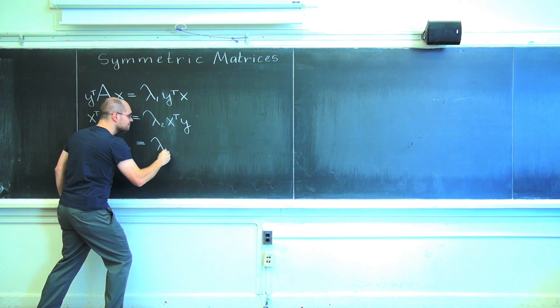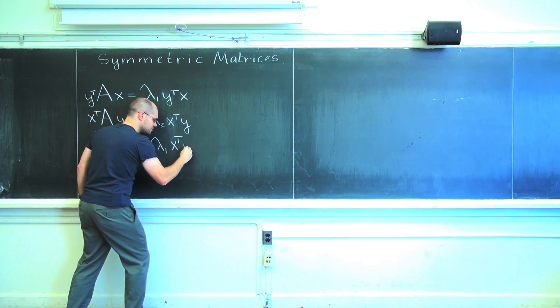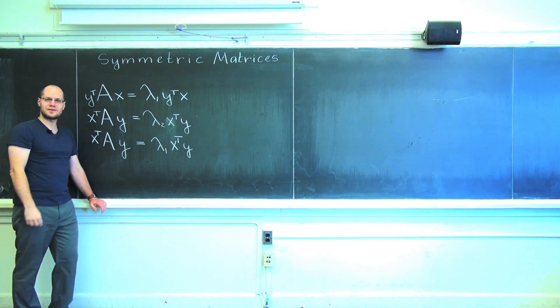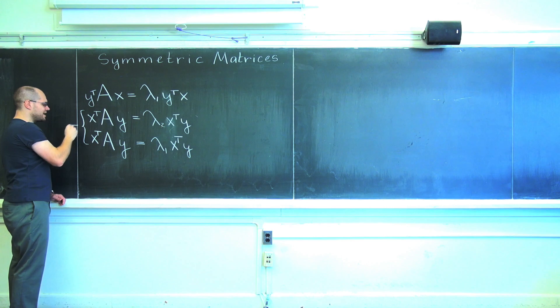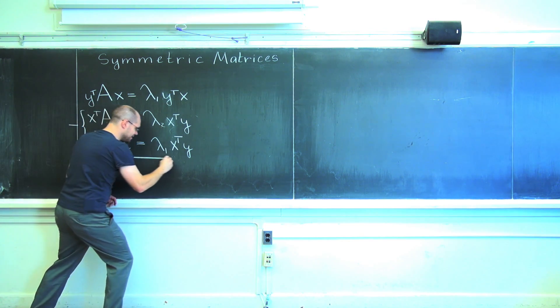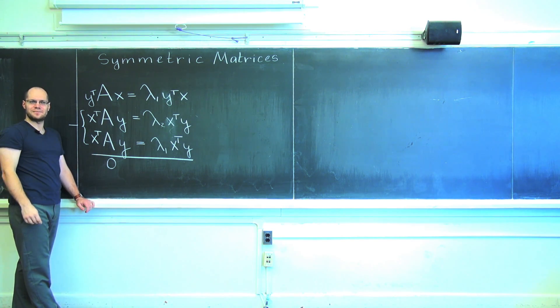Equals lambda 1. Same thing here, X transpose Y. X transpose Y must be 0. Okay, perfect. Now I'm going to subtract one from the other. And on the left side I get 0. Obviously these two expressions are the same.